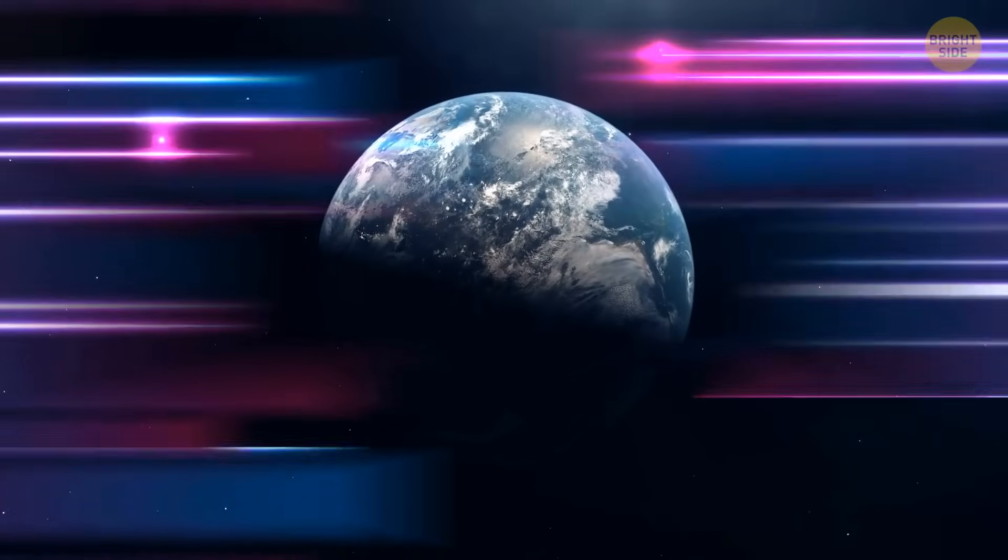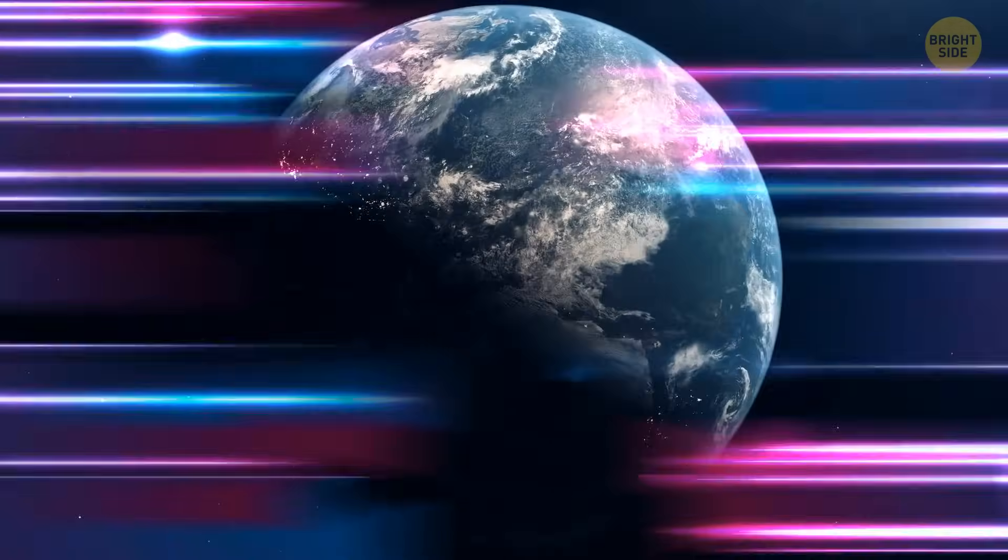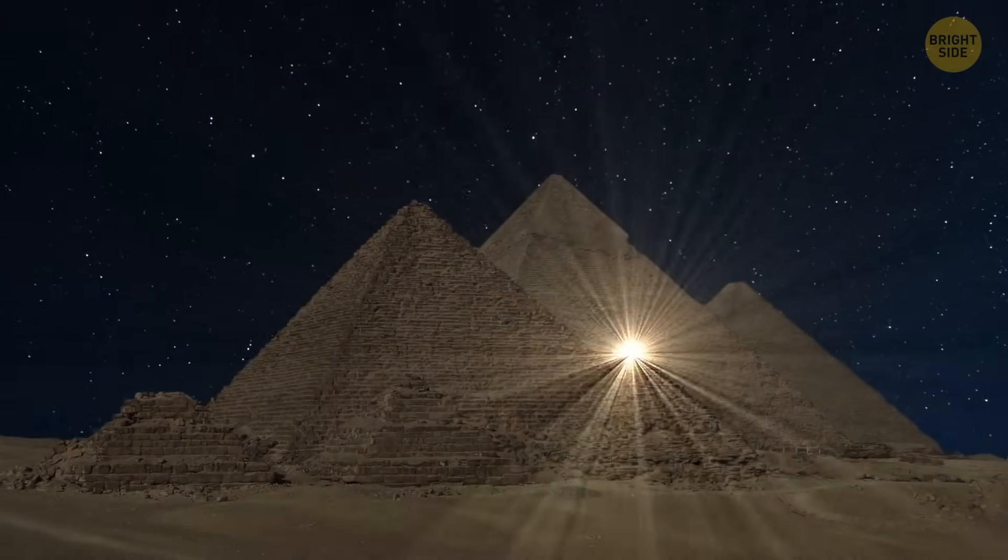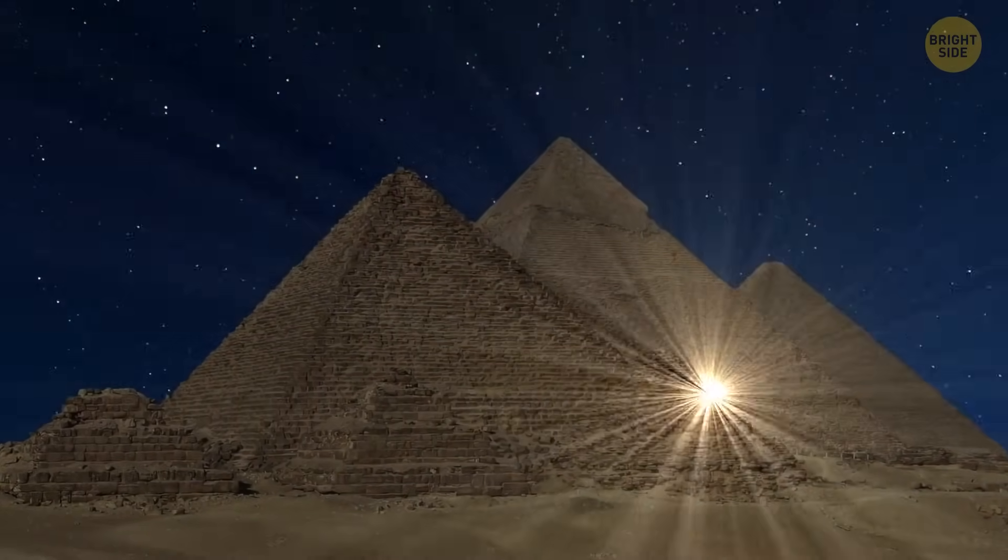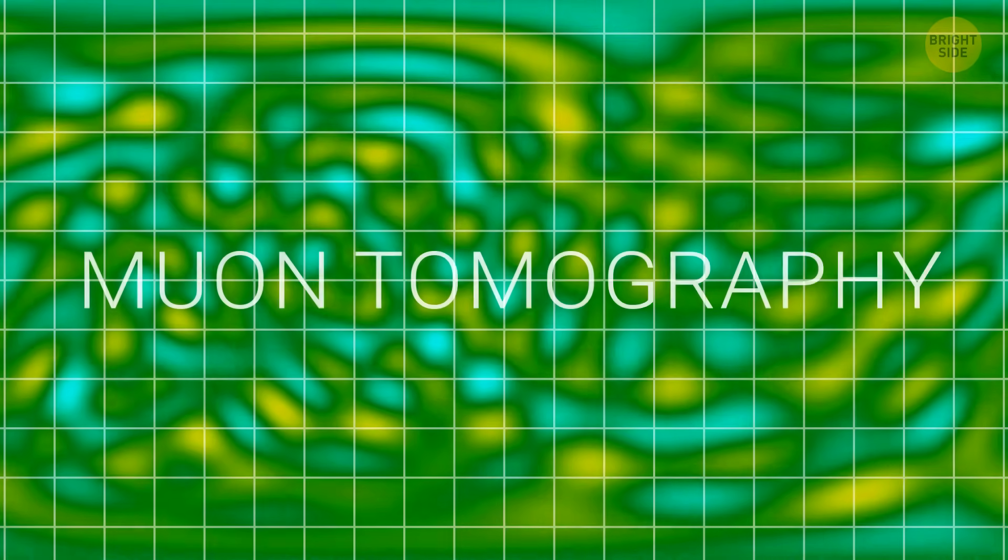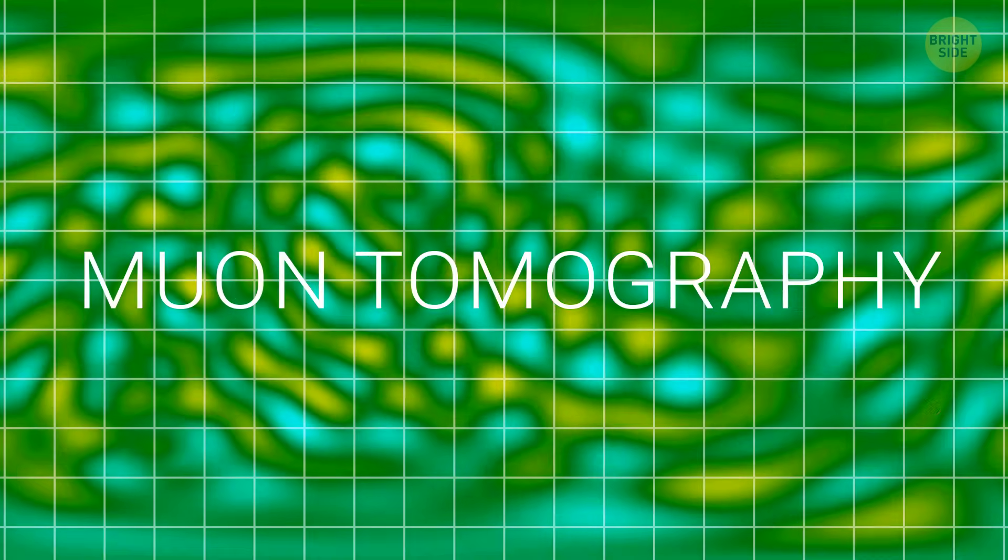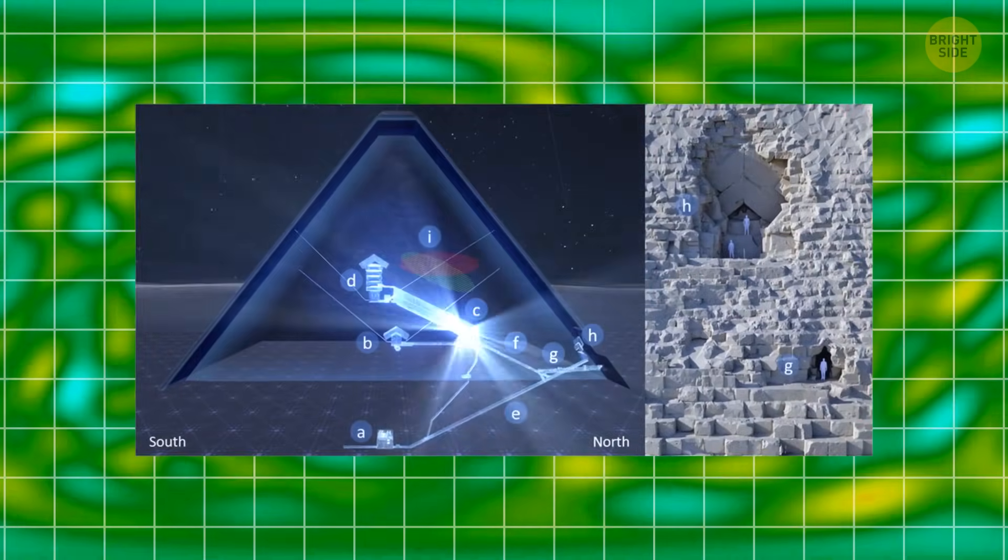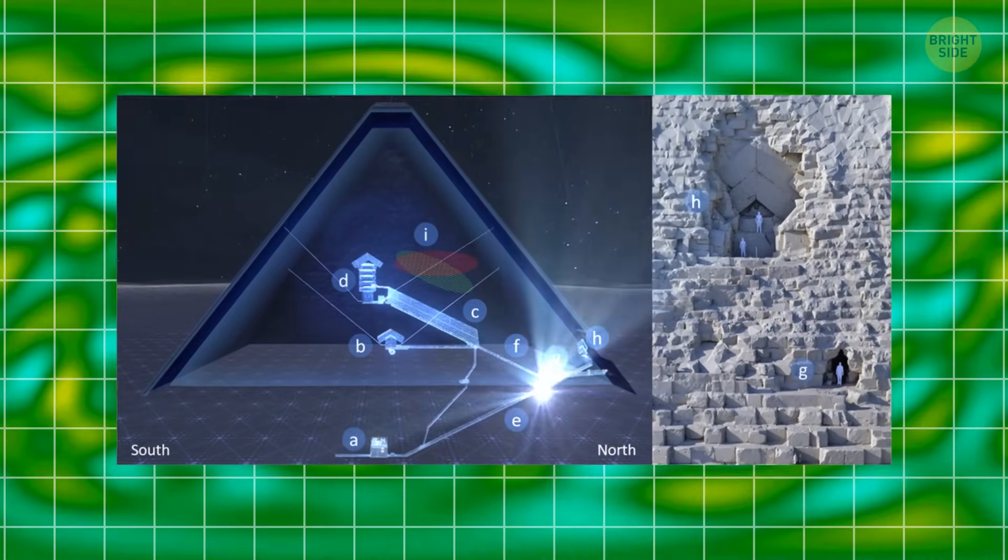Cosmic rays aren't just intriguing for astronomers. They also have earthly applications. In 2017, researchers used cosmic rays to discover a hidden void in the Great Pyramid of Giza. They used muon tomography, a method that examines cosmic rays penetrating solid objects. And this is how scientists unveiled the secrets of the ancient structure.